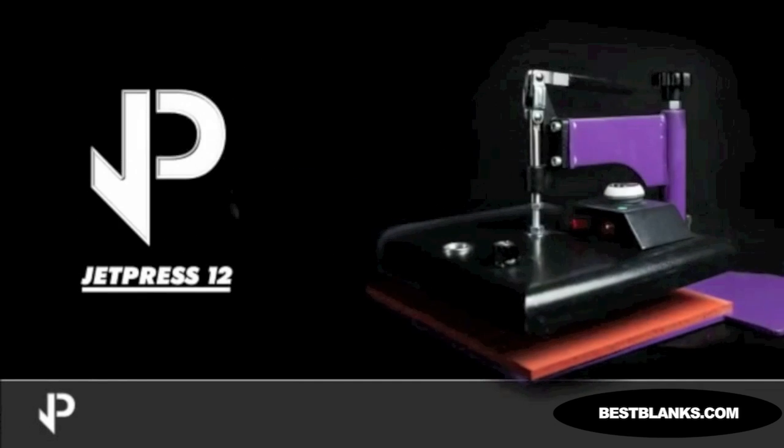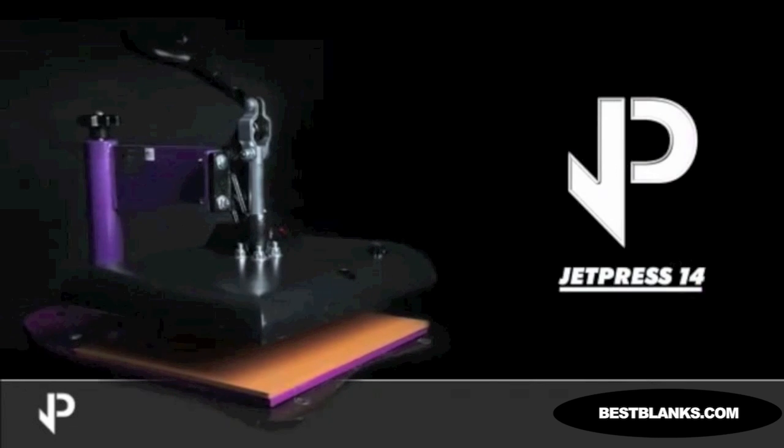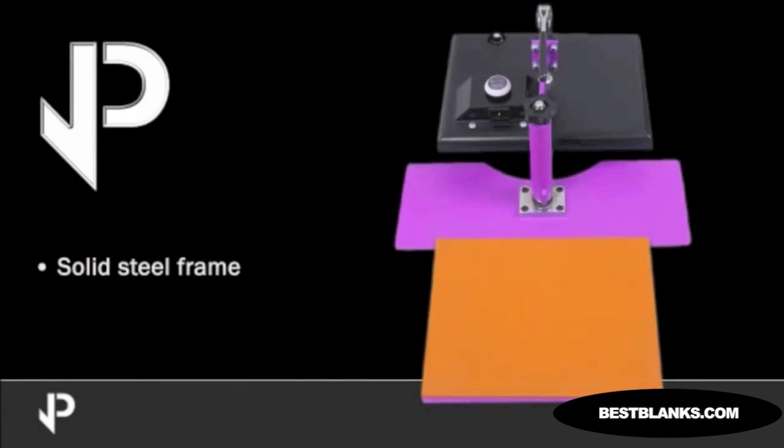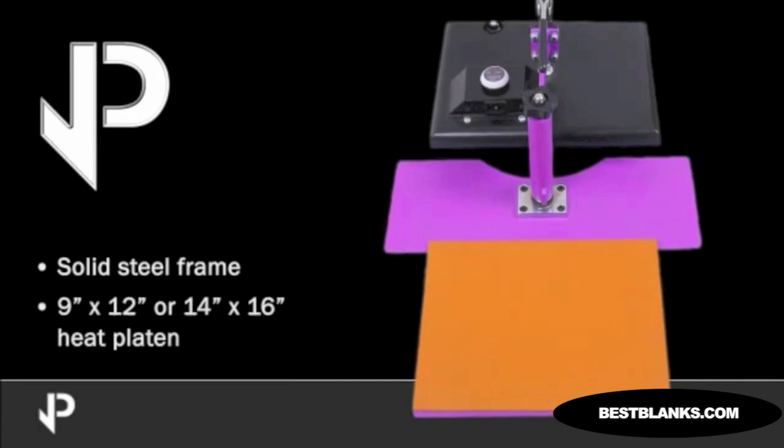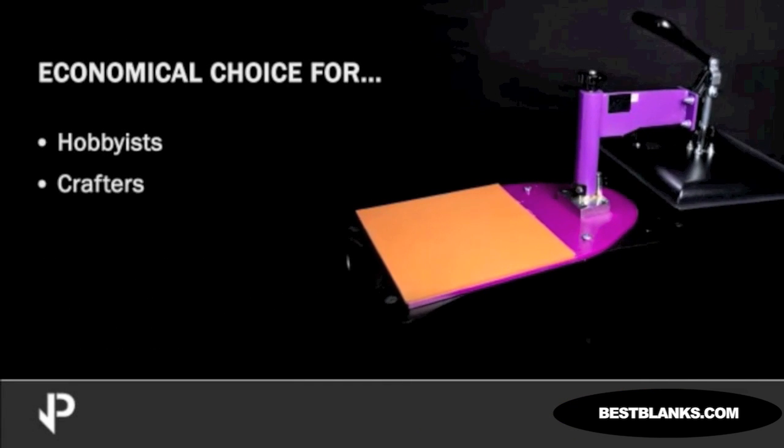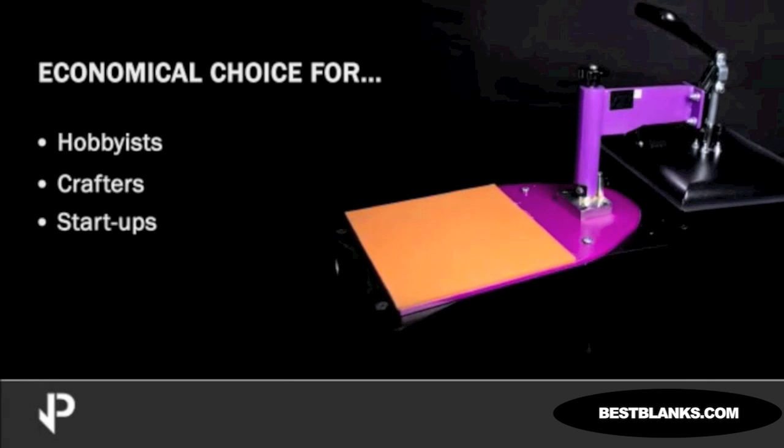The JetPress 12 and JetPress 14 are heavy-duty, entry-level, and affordable heat presses. Made of a solid steel frame and a 9 by 12-inch or 14 by 16-inch heat platen with a silicone pad, these machines are an economical choice for hobbyists, crafters, and startups looking to introduce heat transfer technology to their business.